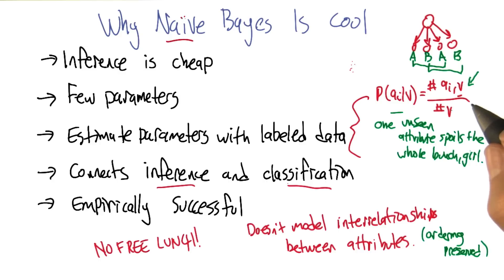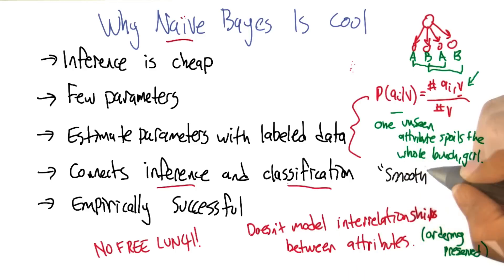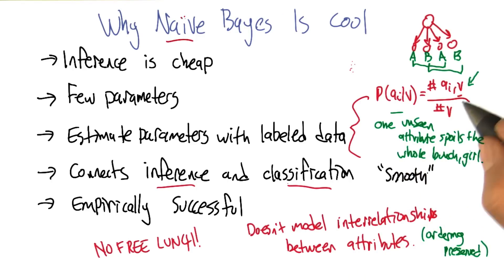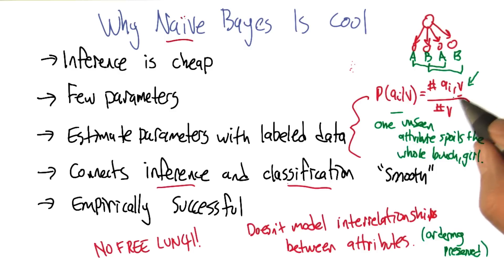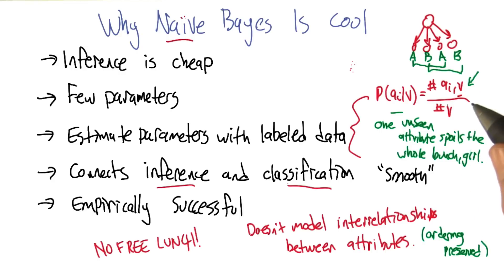Good point. That's not what people often do. People will often smooth the probabilities by essentially initializing the count so that nothing is zero — everything has a tiny little non-zero value in it. There are smarter and less smart ways of doing that. But yes, that zeroing-out problem is a real thing and you have to be a little bit careful.